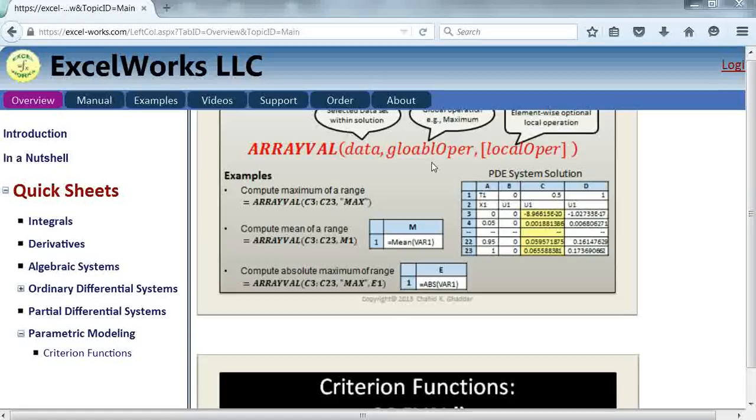For example, if we wanted to compute the maximum of U1, we could simply select the column for U1 in the solution, which is in column C3 to C23, and apply the operation maximum. For simple operations like maximum, minimum, and mean, you can simply pass strings. Another example is we can compute the mean of U1, and for the global operation we can pass the formula mean var1. It's a convention that any formulas passed in the global operation or local operation have to reference the variable var1.